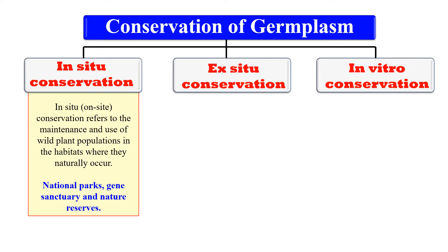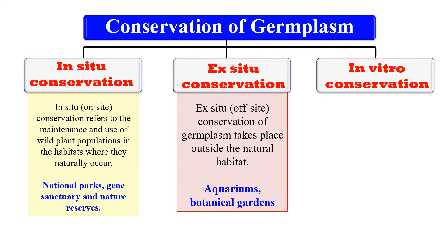The second is ex-situ conservation. Ex-situ means off-site, meaning in this kind of conservation we just take out or transfer the plants from their natural habitat to some artificially created habitats. These include aquariums and botanical gardens, in which we create the natural habitat and transfer plants from their natural habitat to preserve them off-site.